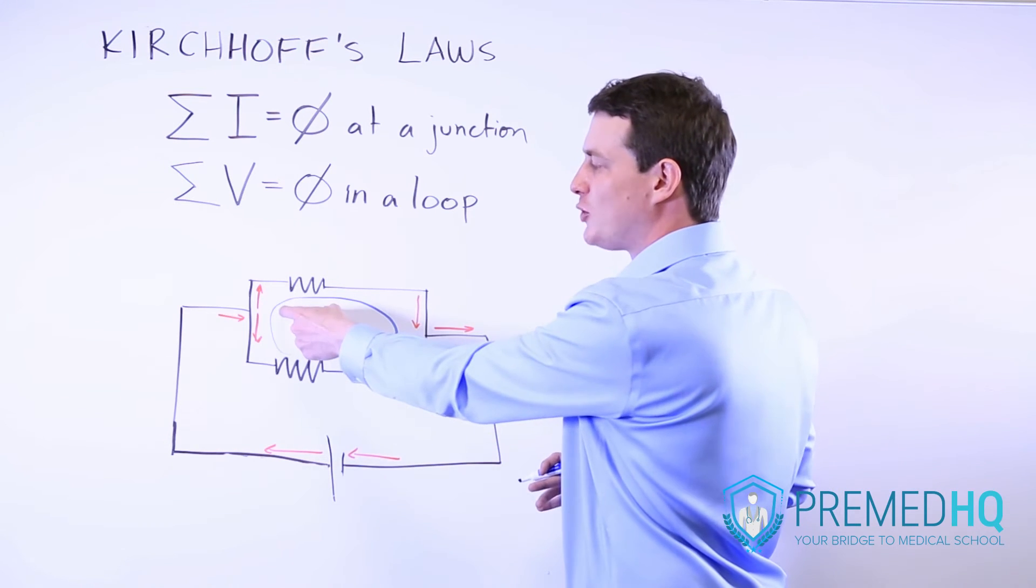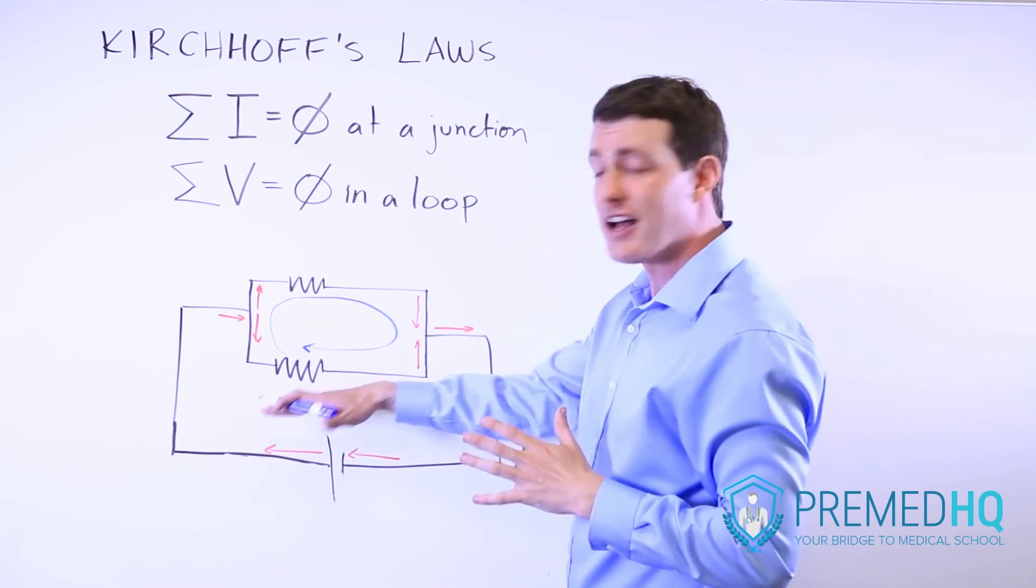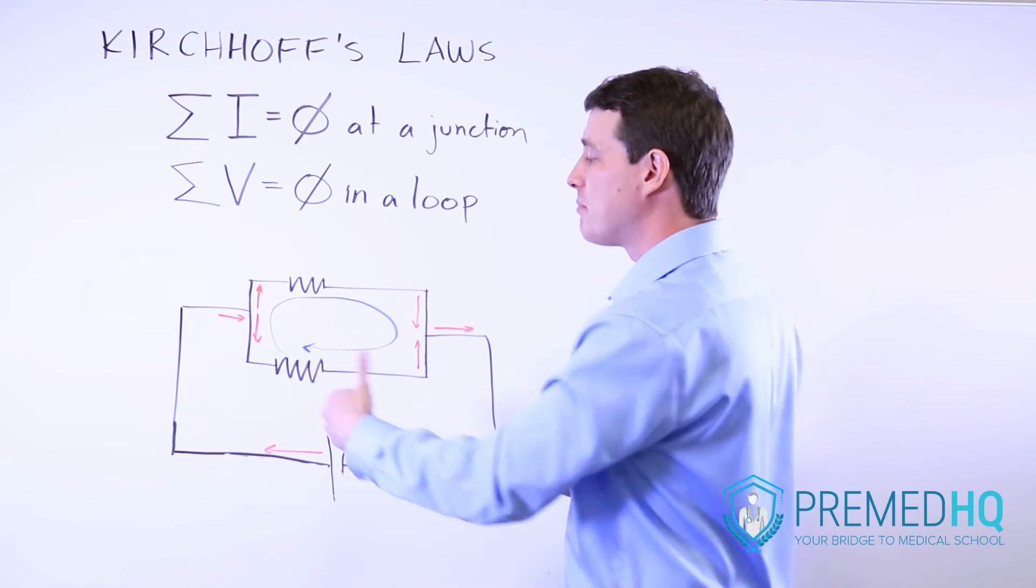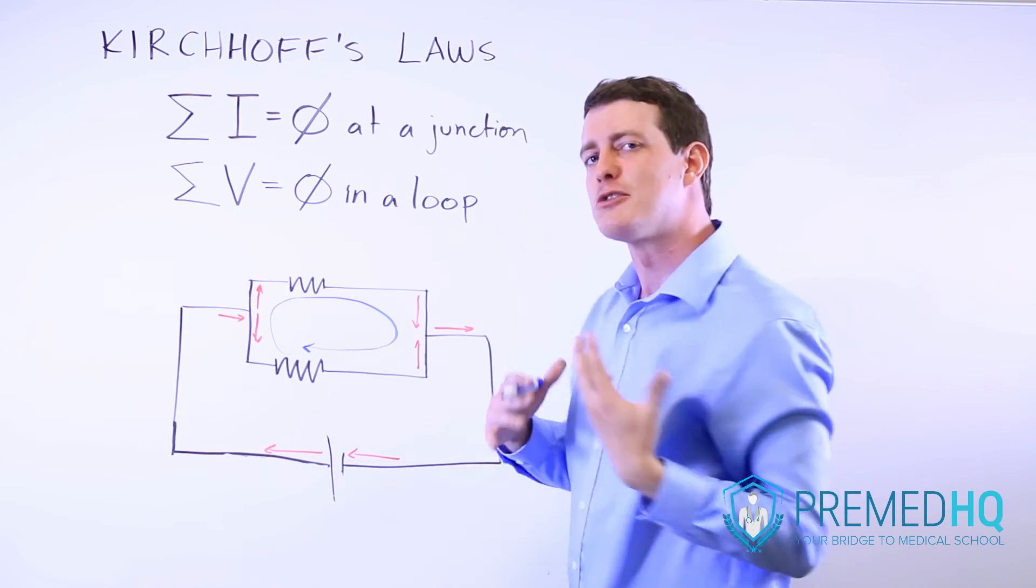If you have a 10 volt drop here, you're going to have a 10 volt drop there. And if this was a capacitor, that would be true too. The drop across the capacitor here would be the same as the drop across the resistor there.